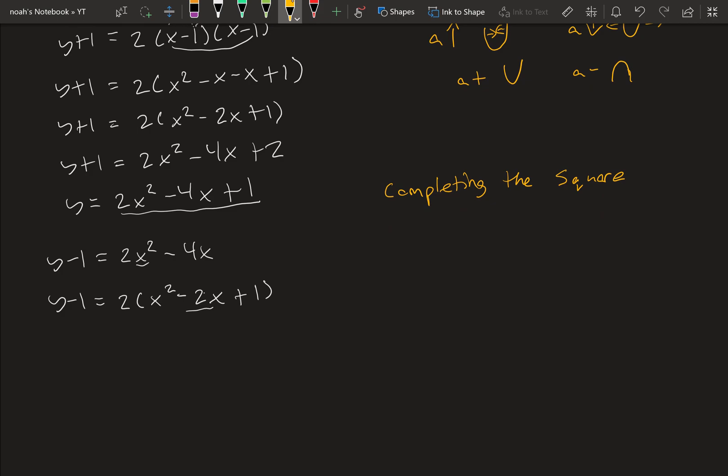And since we added 1 here, we have to add it to the other side. But there's also a 2 in front here. So we have to multiply 2 by 1, which is 2, and then add it to this side. So we get y plus 1 is equal to